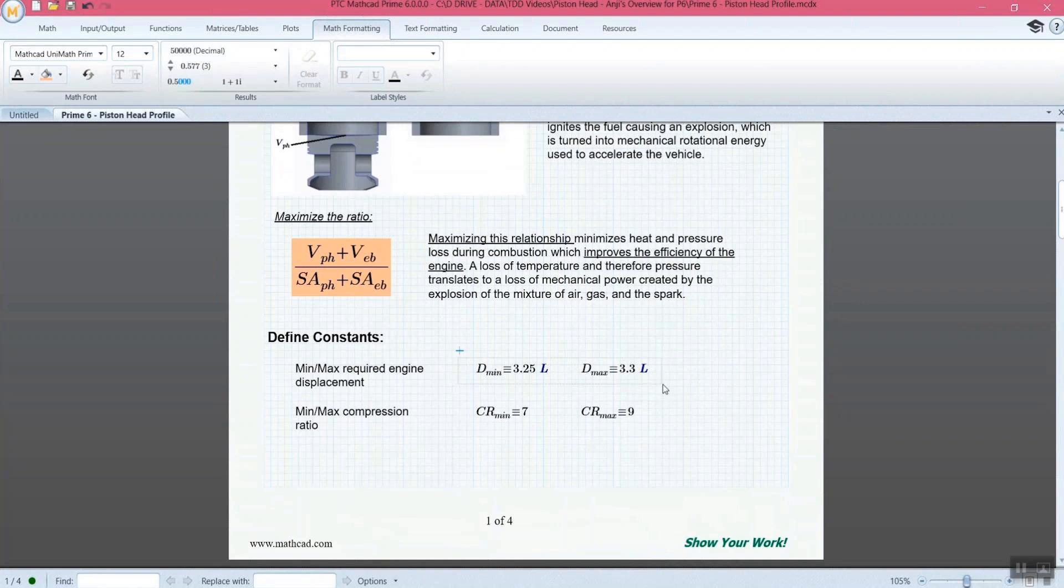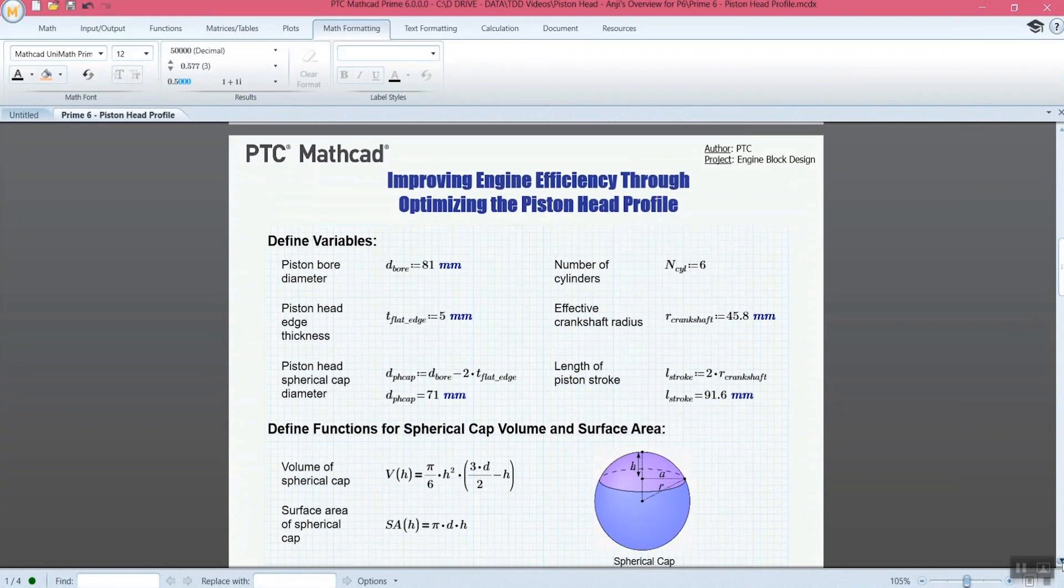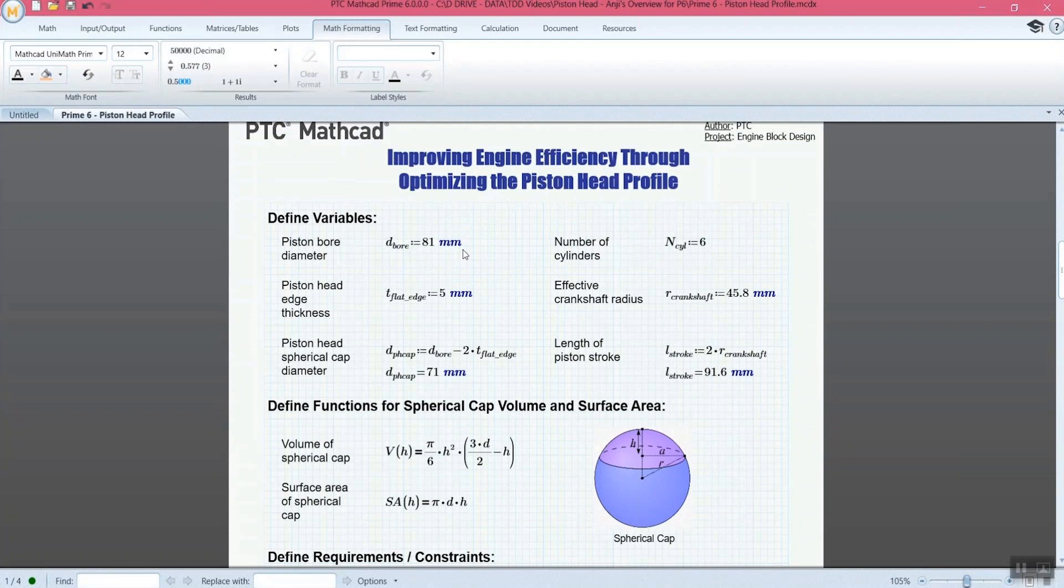We also define our constants. So these are going to be defined here and we can use those constants then throughout the whole document. So we have a short description. We have the minimum and maximum of the diameters and of displacement and compression ratio. And then we also have some variables. You'll see here all of our variables are defined with units. And this is really important because MATCAD does units so well. It knows what units are. It knows what to do with them. It knows how to convert them and carry them through the document.